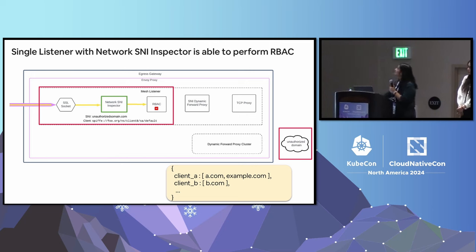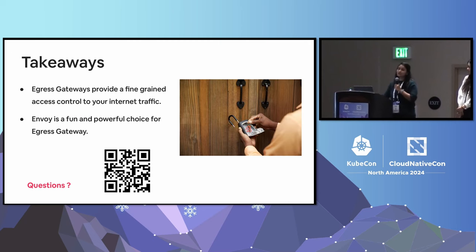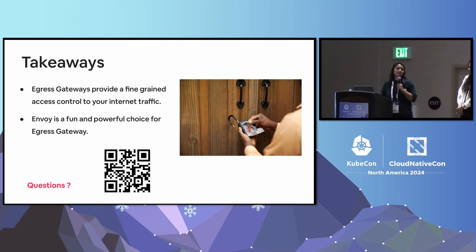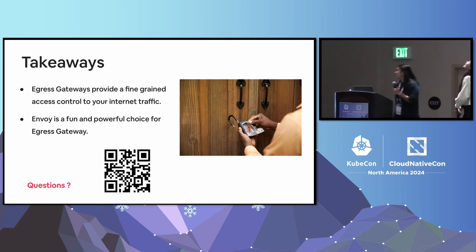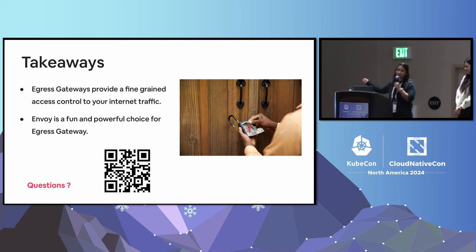With that, our exploration of the egress gateway concluded, and we are really thankful to the open source community for helping us. As you walk out today, I'd like you to think about a few things: explore what egress-level controls you have within your organization — are they fine-grained enough to provide complete security? Do you need an egress gateway? And if you decide to go down that road, Envoy is a fun and powerful technology to explore — except the debugging sometimes. We would love to take any questions, and here is the QR code for session feedback. Thank you.